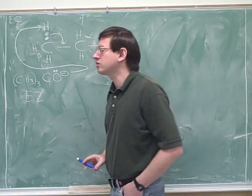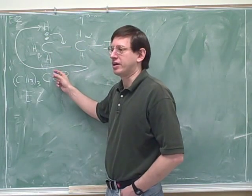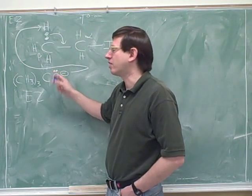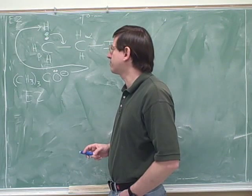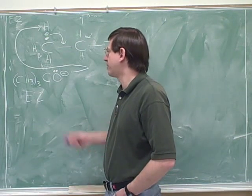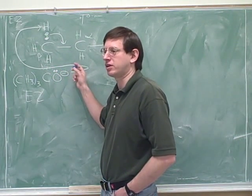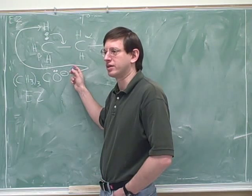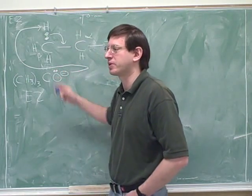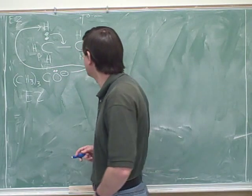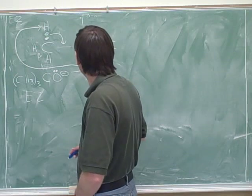Now, usually people don't need to draw this lone pair. Usually a lone pair is not drawn. However, it's good for a beginning student to always draw the pair of electrons that are moving, just so they can be clear in their mind about what the electron-pushing arrows mean.